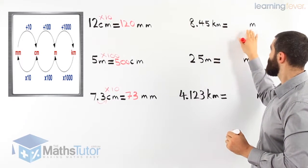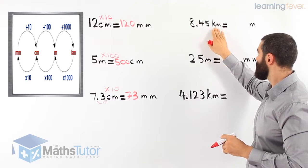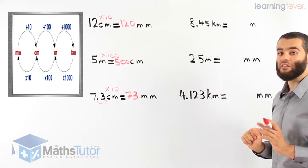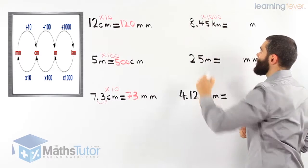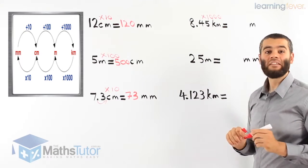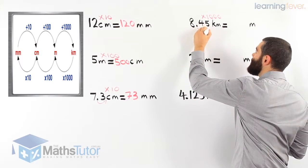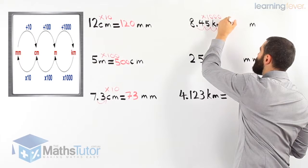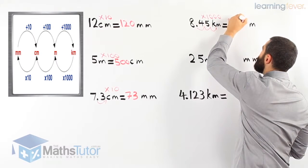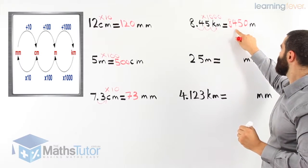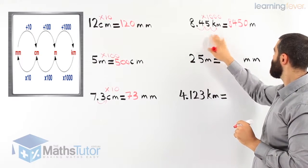We're going now from kilometres to metres. 8.45 kilometres to metres — it's always important to see which unit you're going from. Kilometres to metres, we know we've got to multiply by 1000. So 8.45 times 1000: since 1000 has three zeros, we move the decimal point to the right three places, giving us 8450. So 8450 metres is exactly the same as 8.45 kilometres.